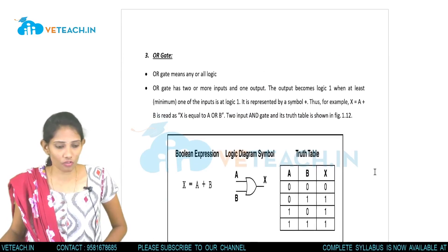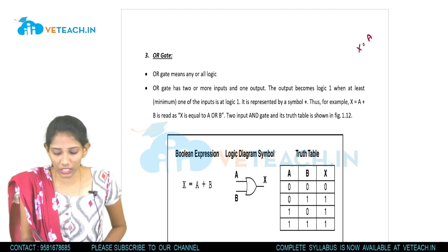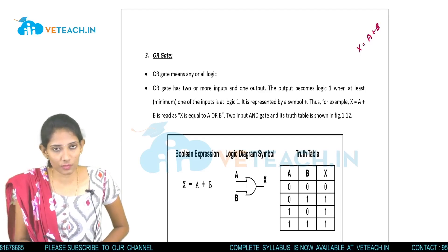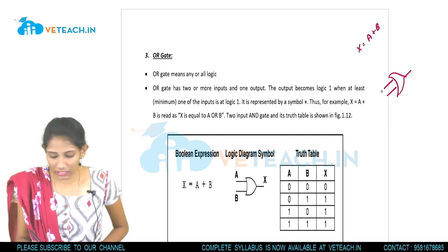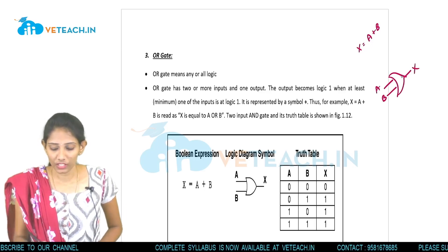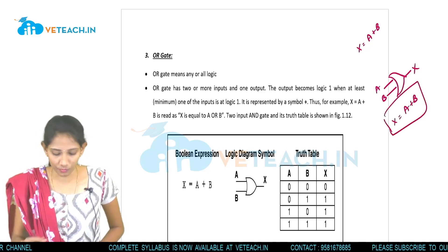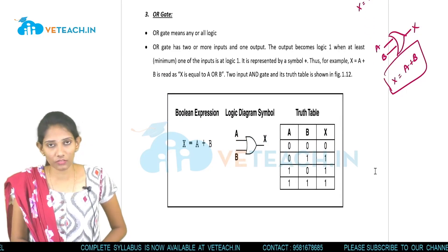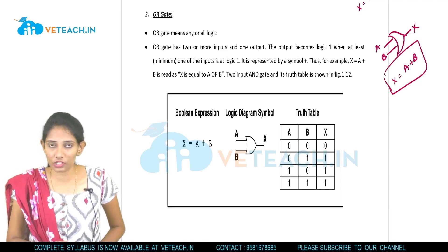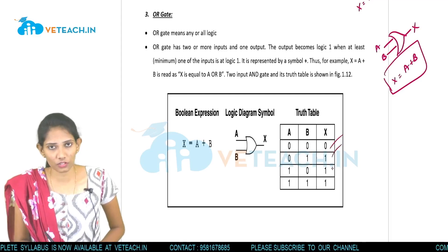The next gate is the OR gate. The OR gate is represented as X equals A plus B. The logic symbol is drawn with a curved shape; A and B are the inputs and X is the output. The expression X equals A plus B is in boolean form. With two inputs we take four combinations for the truth table.